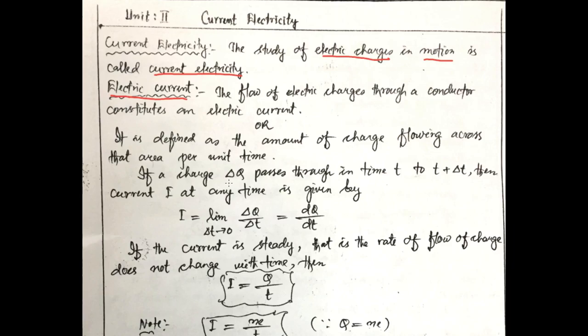If a charge Del Q passes through in time T to T plus Del T, then the current I at any time is given by I is equal to limit Del T tends to 0, Del Q by Del T is equal to DQ by DT.